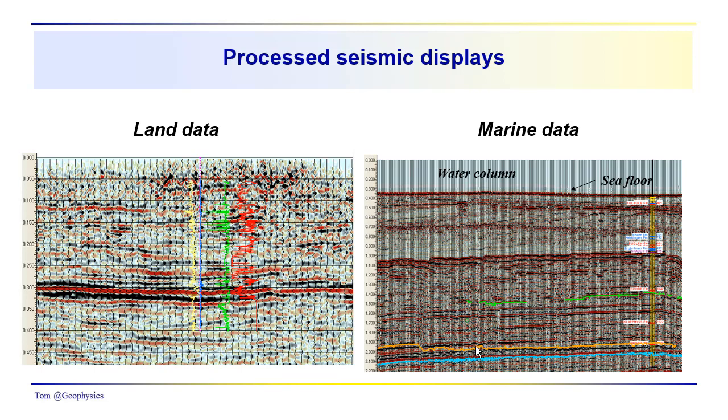But you can see where the automatic cycle picking of the computer can get off track sometimes. Instead of correlating up here, it may correlate with this reflection event here. This reflection event, the computer found it pretty easy to correlate across the section. So this is typical processed seismic data that you may have seen before.